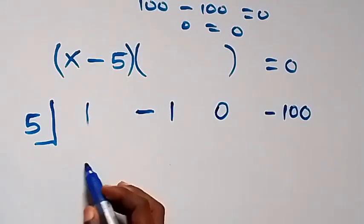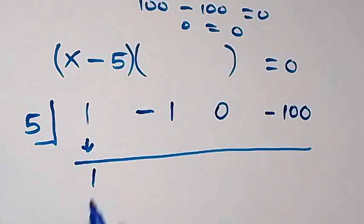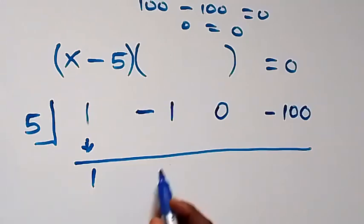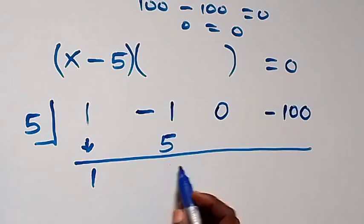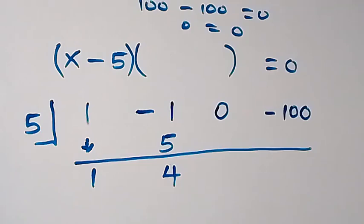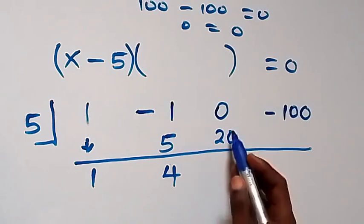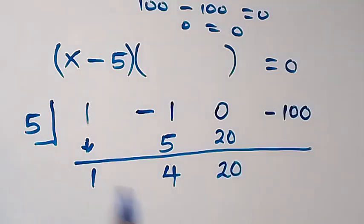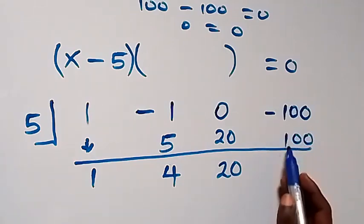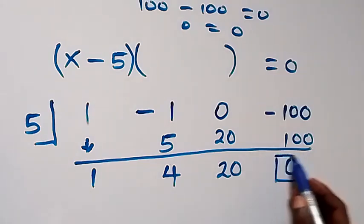When we divide using synthetic division, we divide by 5. The first step is to bring down the first number, which is 1. Then 5 times 1 is 5. We sum: minus 1 plus 5 gives us 4. Then we multiply again: 5 times 4 is 20. We sum: 0 plus 20 is 20. Then 5 times 20 is 100. When we sum: minus 100 plus 100 gives us 0. The remainder is 0, confirming that 5 is a factor.